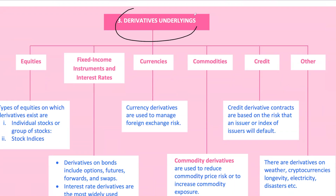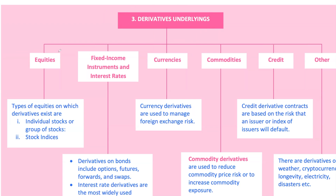What underpins these derivatives? Derivatives can be based on just about any asset or variable, but the most common are equities, fixed income securities, interest rates, currencies, and commodities. Equity derivatives include contracts on individual stocks or stock indices, allowing investors to trade on stock prices without holding the actual stocks. A classic example is an index option where one party might pay the return on the S&P 500 index while the other pays a fixed rate or another index's return. Companies often issue stock options to their executives as a form of compensation — if the company's stock price rises, executives can profit, aligning their interests with shareholders.